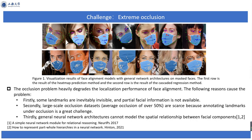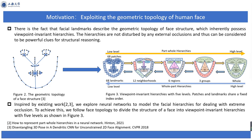There is the fact that facial landmarks describe the geometric topology of face structure, which inherently possess viewpoint invariant hierarchies. These hierarchies are not disturbed by any external occlusions and thus can be considered powerful clues for structural reasoning. Therefore, we argue that exploring neural networks to model facial hierarchies is a more promising method for dealing with extreme occlusion.